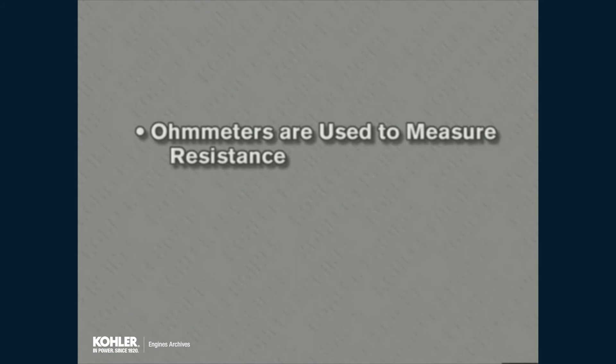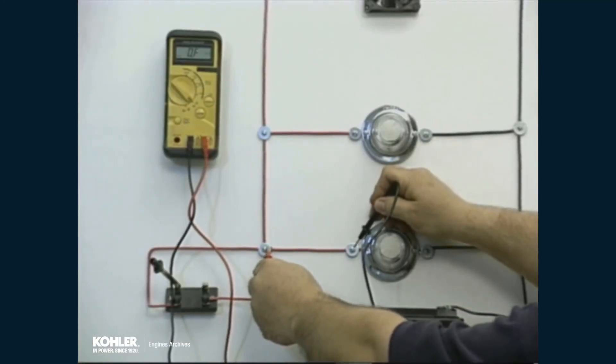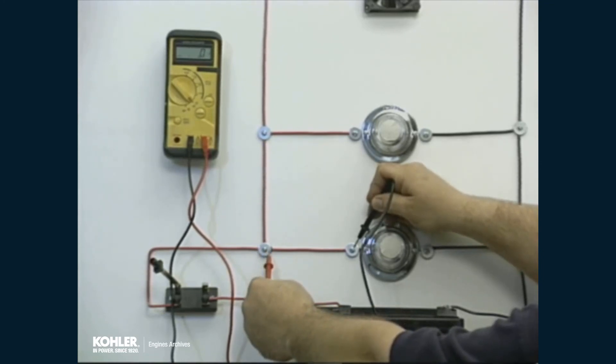Ohmmeters are used to measure resistance in components or sections of a circuit. An ohmmeter supplies its own power to the component or circuit being tested, so an ohmmeter should never be used in an active, powered circuit. Like voltage, resistance is measured parallel to the component or circuit being tested. An ohmmeter is connected to each end of a segment of the circuit that is suspected to have a circuit fault, and the resistance in that segment is read in ohms.